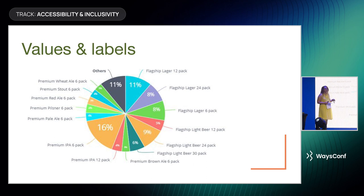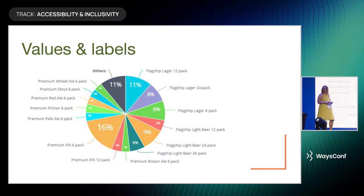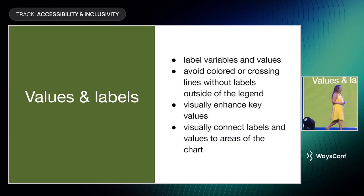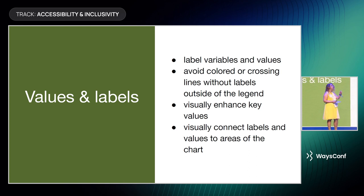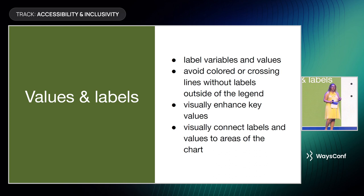If you're feeling creative, I've seen pie charts with larger labels for more numerous categories — it's better than no labels at all. Key points: always include labels; try to enhance key values by pointing them out with a dot or writing the value next to the variable. Visually connecting labels to their corresponding areas is also a great idea.